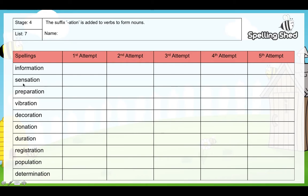Look at 'information', say it — information — cover it over, you can just use a piece of paper to cover that over, write it out — information — and then check it. Make sure that your attempt is the same as the correct spelling.